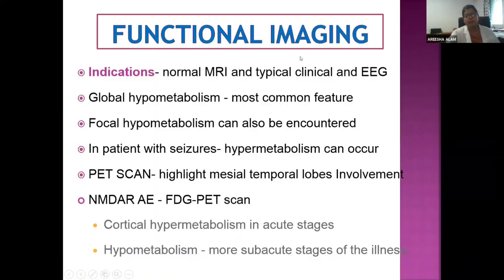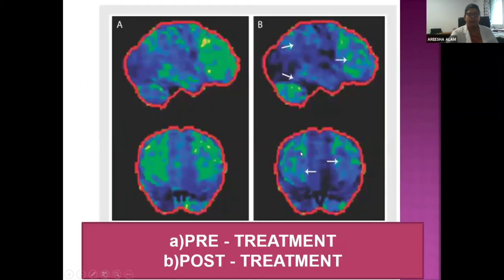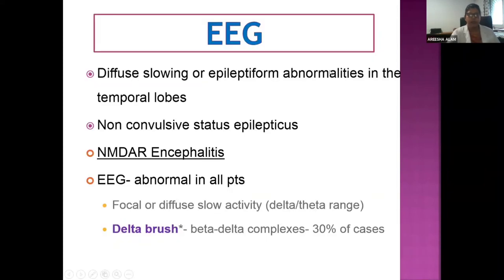When MRI is normal but the clinical picture is typical of autoimmune encephalitis, functional imaging such as PET scan may be used. Global hypermetabolism is seen in most cases; focal hypermetabolism may be present in patients with seizures. PET scan images demonstrate: in the pre-treatment scan, bilateral temporal lobe hypermetabolism (shown in green), which decreases after immunotherapy on the post-treatment scan — demonstrating a beautiful response to treatment.